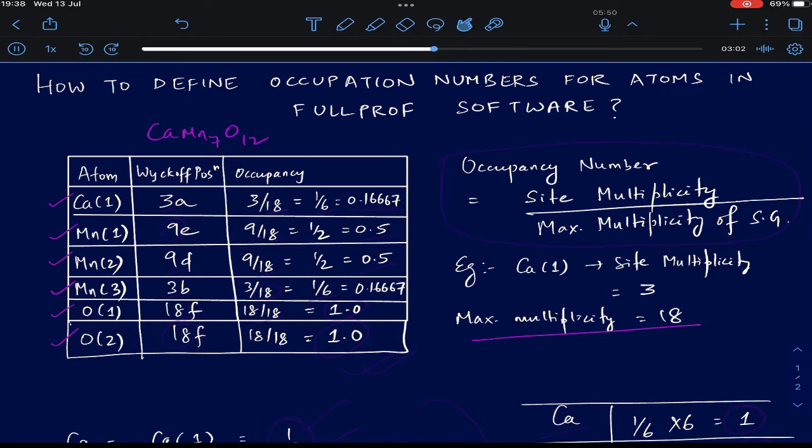To define the occupancy of each atom or ion, you have to divide its site multiplicity by the maximum multiplicity of the space group. Hence, for the calcium atom, the occupancy number that you will write in FullProf is given by 3 divided by 18, where 3 is the site multiplicity and 18 is the maximum multiplicity of the space group. That gives you a number 1/6, which is 0.16667.